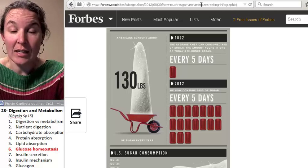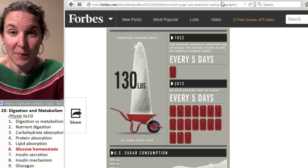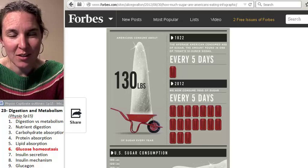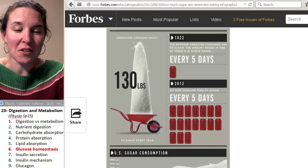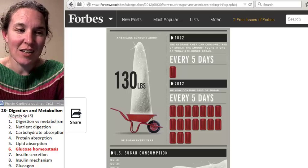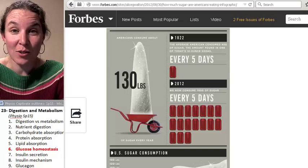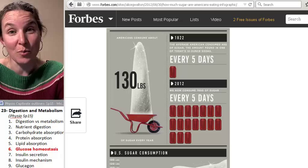Forbes did an infographic on Americans and their sugar consumption. Ultimately, the sugar you eat gets turned into glucose as you digest it, break it down, and then absorb it into your blood.